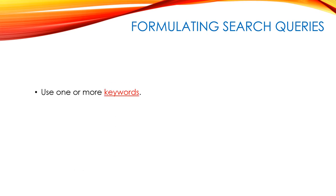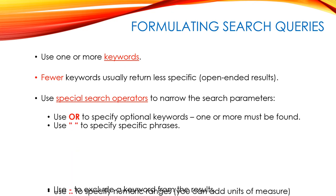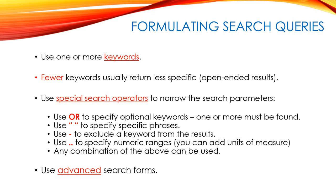Now let's look at the actual formulation of search queries. Most of the time you'll probably type a keyword and hit enter, and it will find some matches. But there are more advanced methods. A keyword is a word you are specifically searching on — the fewer keywords you have, the less specific your results will be. Advanced search operators allow you to be much more specific. In Google, you can use the OR operator for optional keywords, double quotes for specific phrases, the minus sign to exclude a keyword, and two dots to specify numeric ranges. You can use any combination of those.